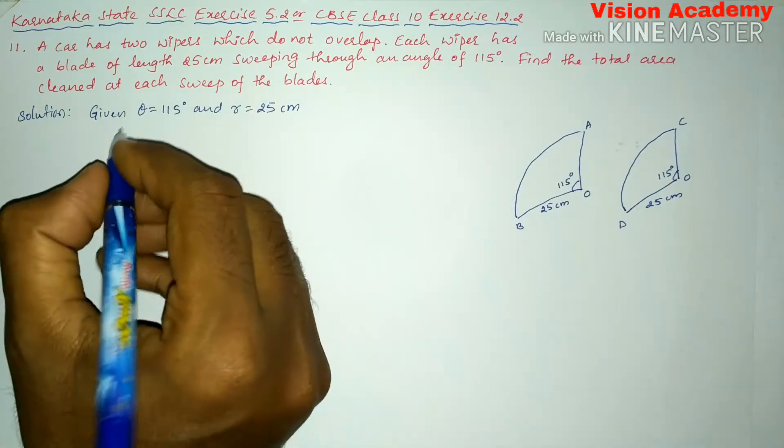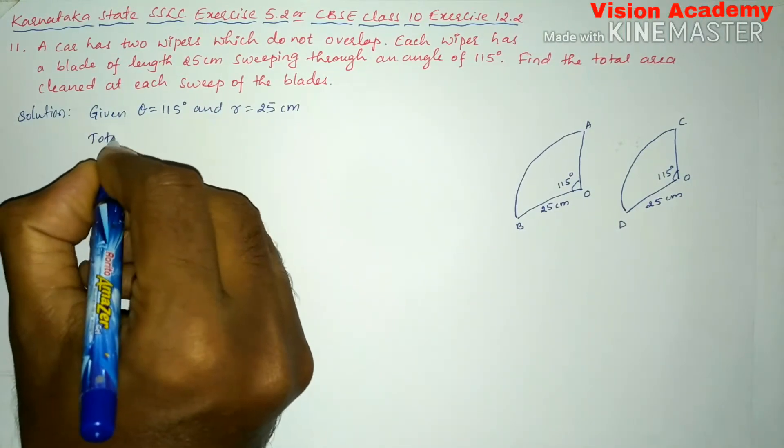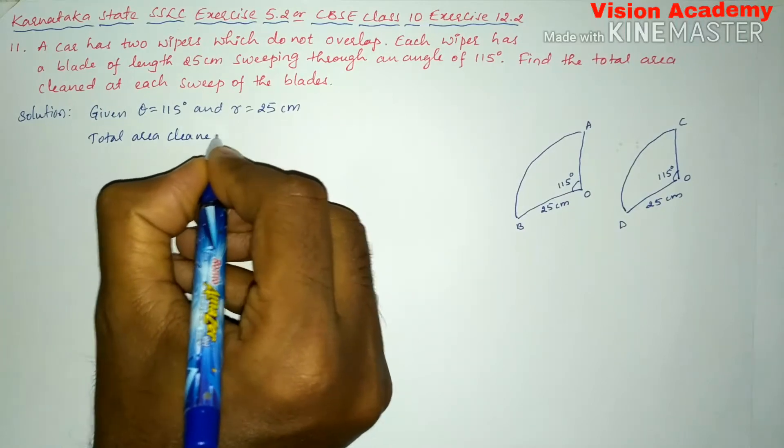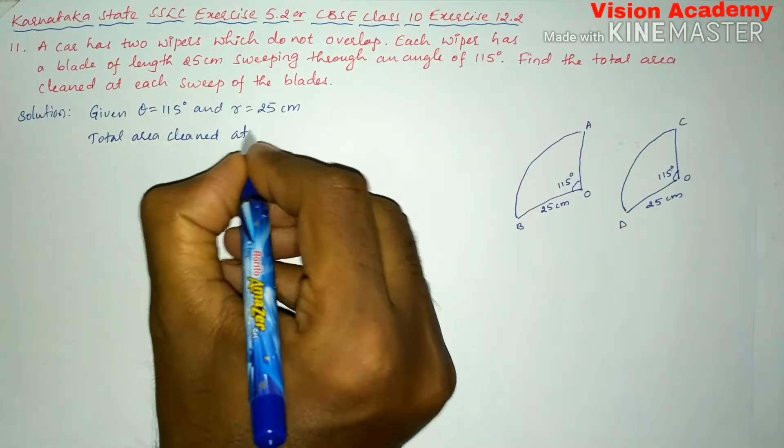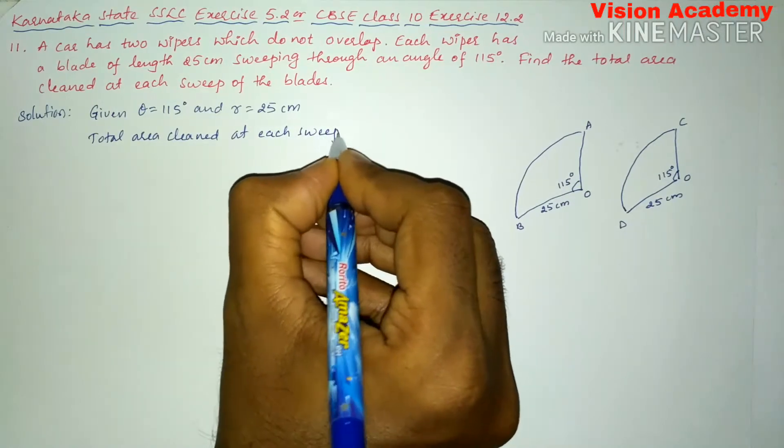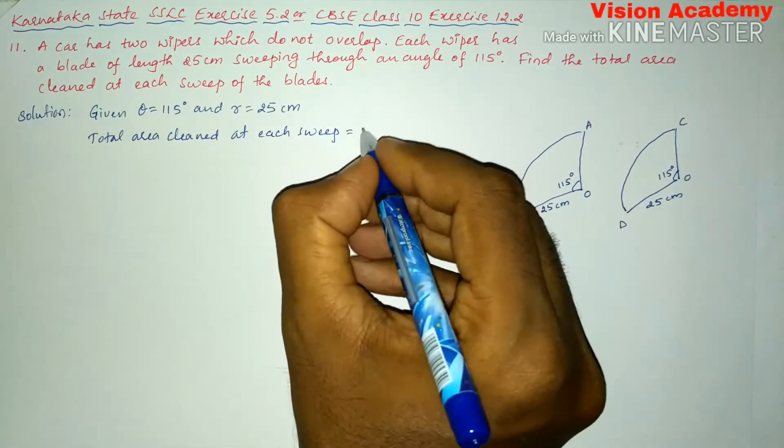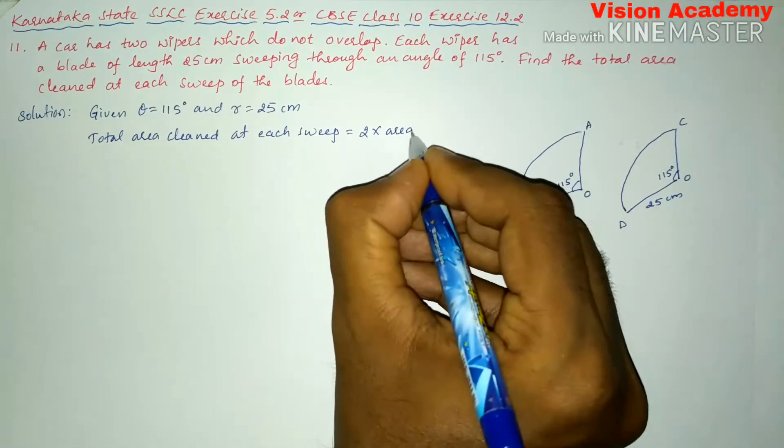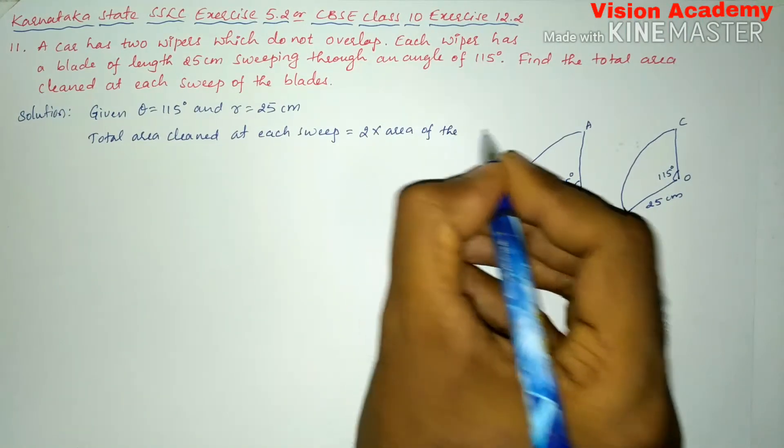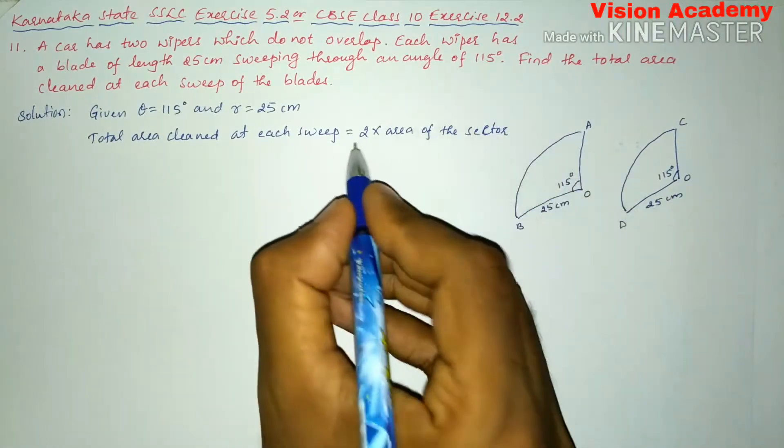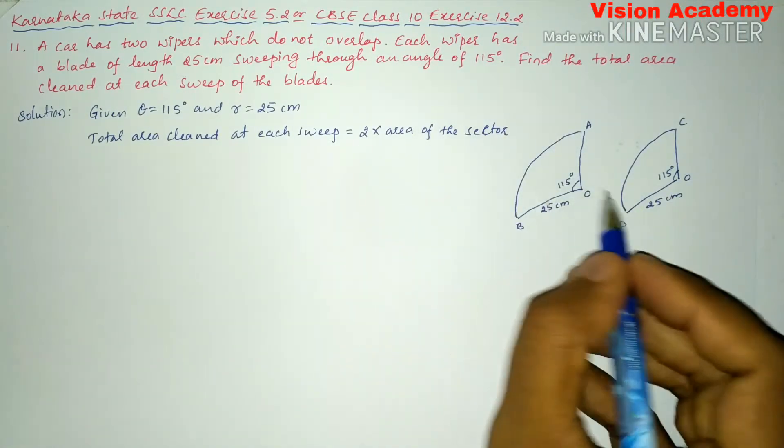Now we will write total area cleaned at each sweep. Each sweep is equal to 2 times area of the sector. This two times just because of two wipers.